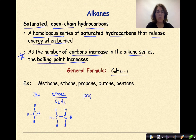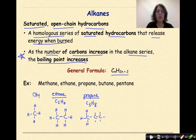Let's go on to propane. 'Prop' means three, so C3H8 — that's 2×3+2. We draw three carbons with -ANE ending, meaning single bonds between all three of them, and then hydrogens surrounding all of them — 1, 2, 3, 4, 5, 6, 7, and 8. So there's propane.